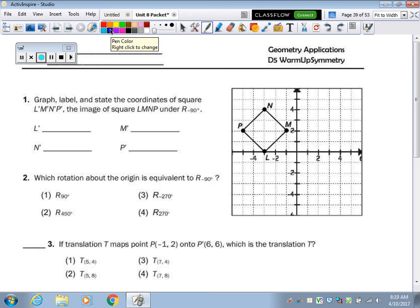So we have a picture of a square, and it says, graph, label, and state the coordinates of square L', M', N', P', which is the image of square L, M, N, P, under a rotation of negative 90.